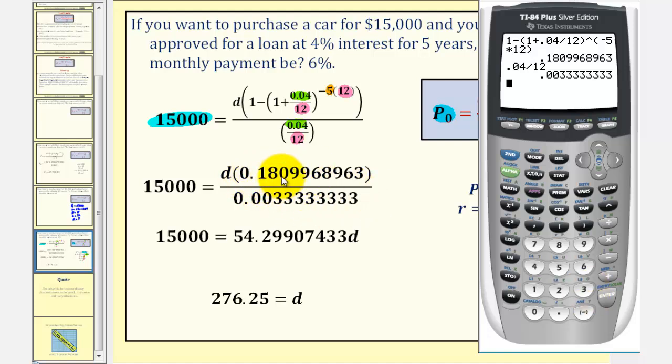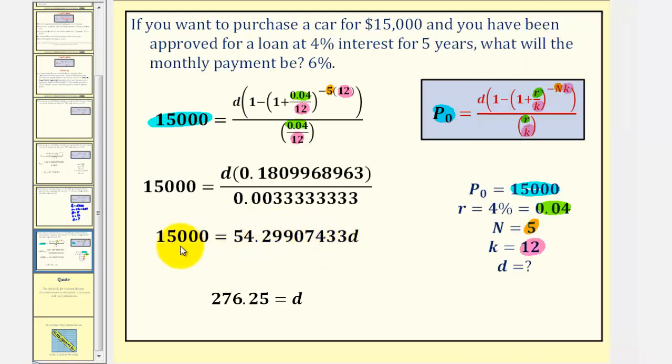Now for the next step, we'll find this quotient here, and then multiply it by D. So we'd have 0.1809968963, divided by 0.0033333333. So notice how this would be the coefficient of D, meaning we'd now multiply this by D, giving us this term here. Now notice in this case, to solve for D, we have to divide both sides by the coefficient.